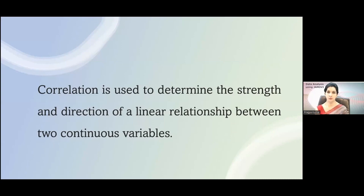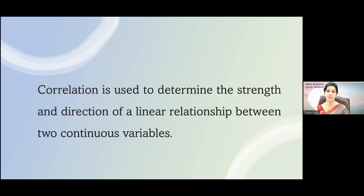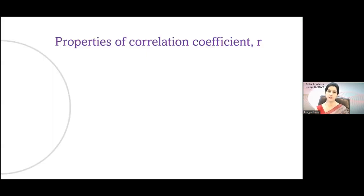Correlation is used to determine the strength of association between two variables, and the nature of both variables should be of continuous nature — like blood pressure, which is continuous in nature where fractional values are also possible. Both variables should be of continuous nature to apply this correlation, and this is specifically regarding the Pearson correlation. In case of Spearman correlation, even if it is ordinal data, you can apply Spearman correlation.